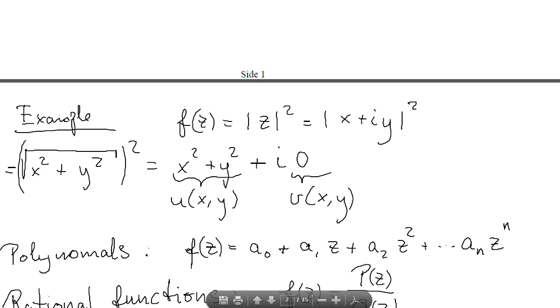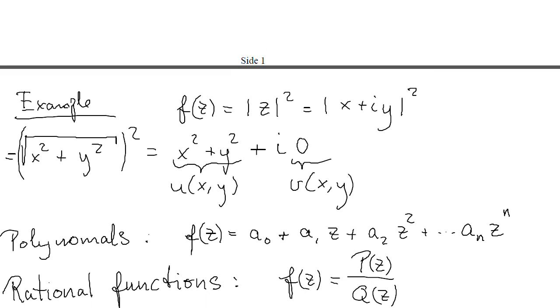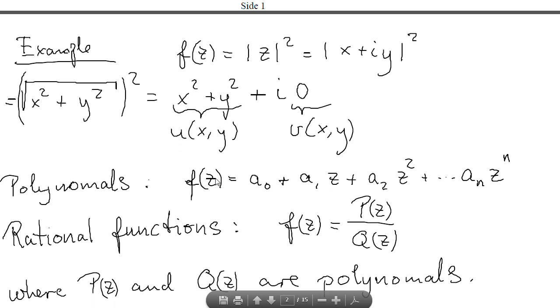We have also other types of functions, polynomials. For example, f of z equals a₀ plus a₁z plus a₂z squared, and so on, exactly the same as in the real case. And also for rational functions. Rational functions means that you have some fraction where the numerator is a polynomial and the denominator is a polynomial.